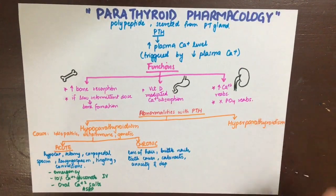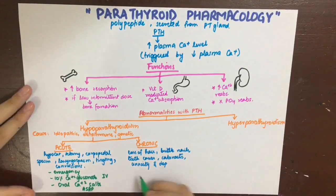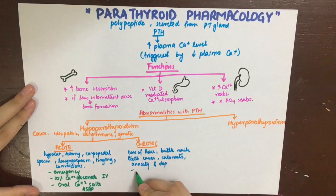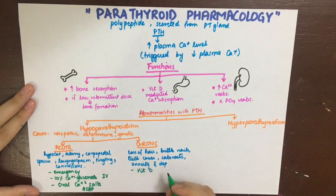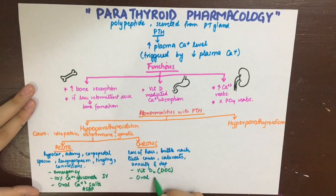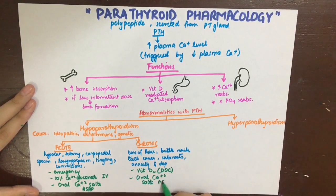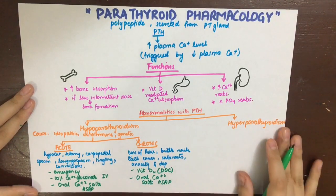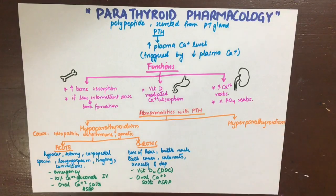The treatment for a chronic hypoparathyroid patient is administration of ergocalciferol, that is vitamin D2, which is the drug of choice, and oral calcium salts should also be started. Hyperparathyroidism can be caused by a parathyroid tumor most of the time.